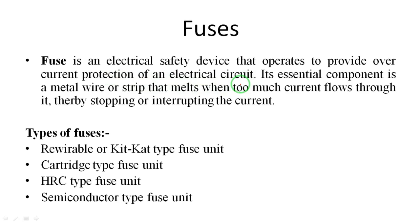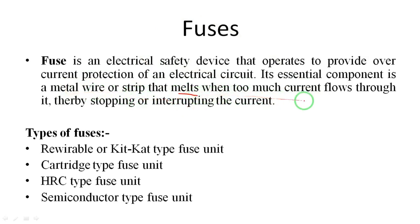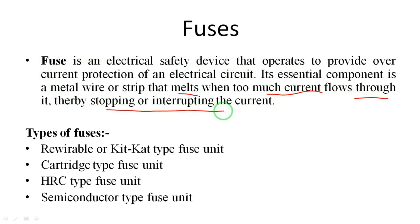A fuse protects devices from overcurrent. When overcurrent flows to the device through the fuse, the fuse melts because it is made of a melting material — a metal wire or strip which melts when too much current flows through it. When too much current flows, it immediately interrupts or stops the current flow. This is the main function of the fuse.